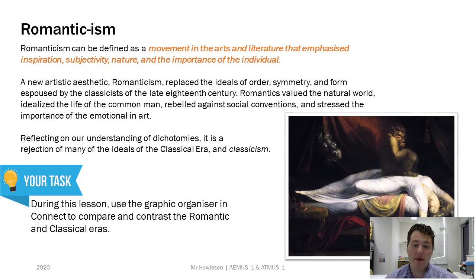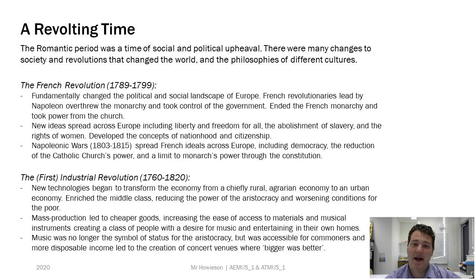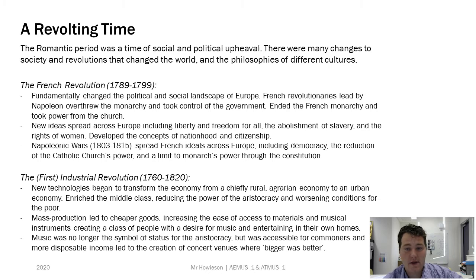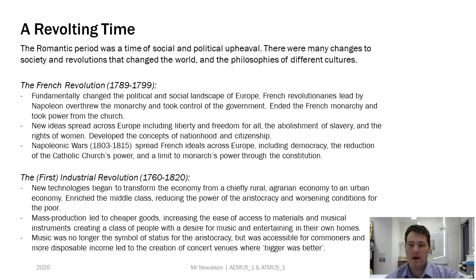The Romantic period from 1820 to 1900 was a result of quite a turbulent time — a period of social and political upheaval. Many changes to society and revolutions changed the world and the philosophies of different cultures. Your two main ones were the French Revolution and the First Industrial Revolution. The French Revolution fundamentally changed the political and social landscape of Europe. French revolutionaries led by Napoleon overthrew the monarchy, ended the French monarchy, and removed some of the power from the Catholic Church. What previously existed was a monarchy or aristocracy where people were considered subjects belonging to the king or lord. With the French Revolution came the development of the idea of nationhood — people actually belonging to a nation, a group, and a country — and from that, the idea of citizenship.